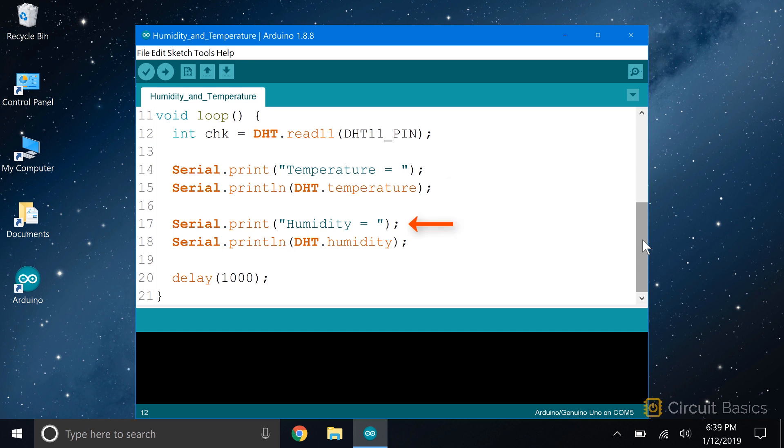To print out the relative humidity, I'm first going to print some text that says humidity. Then I'll serial print the humidity variable. Humidity is another public variable that was declared inside the DHT class. We access it with the DHT object, just like we did with the temperature variable. Okay, now let's see what this looks like when it's running.